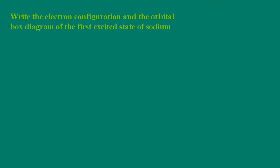Here we're asked to write the electron configuration and the orbital box diagram of the first excited state of sodium. Remember that when an atom in its ground state absorbs energy, it exists in an excited state. So in this case, what's going to happen is the outermost electron is going to be excited.